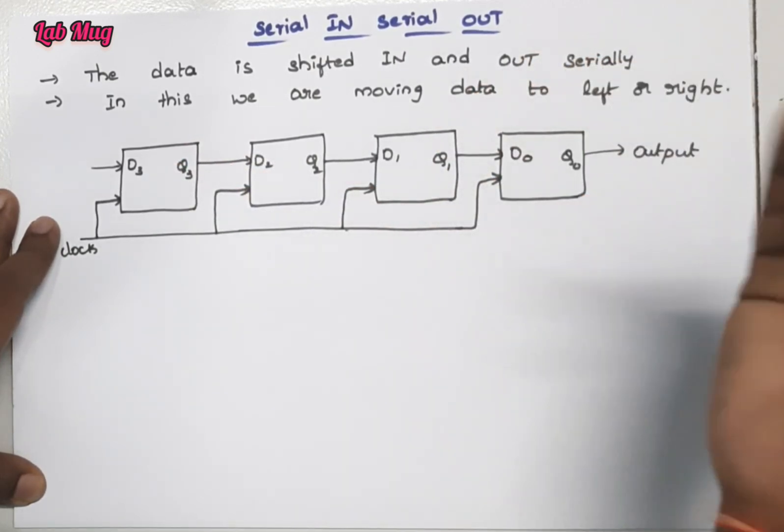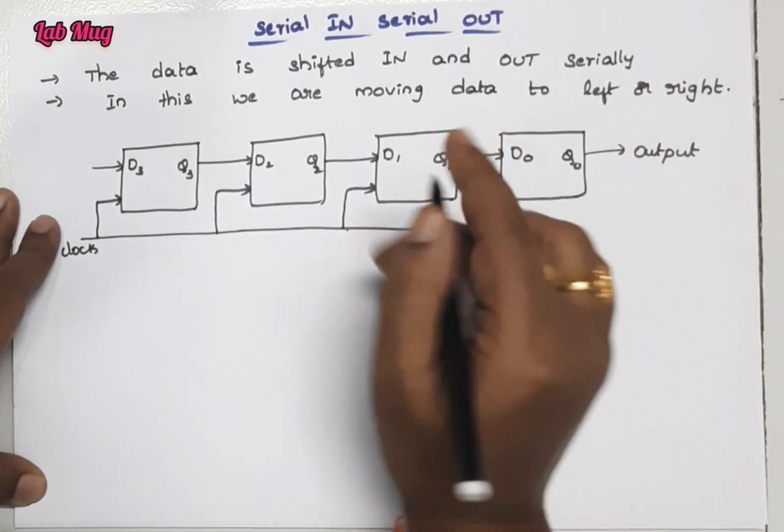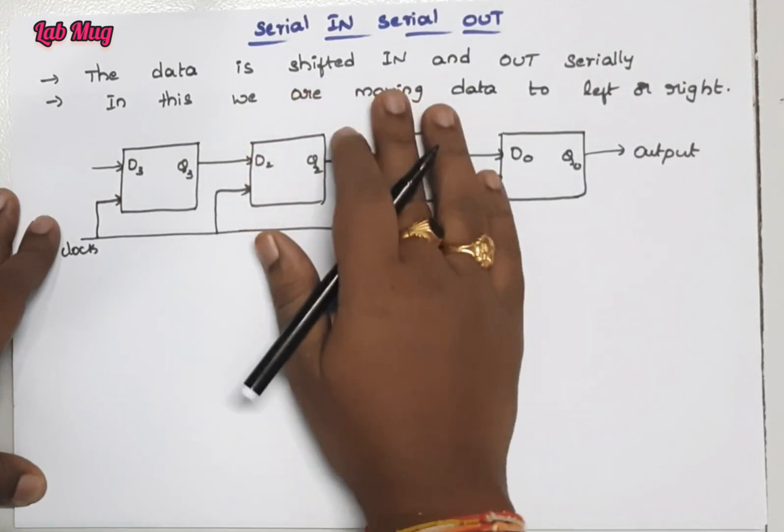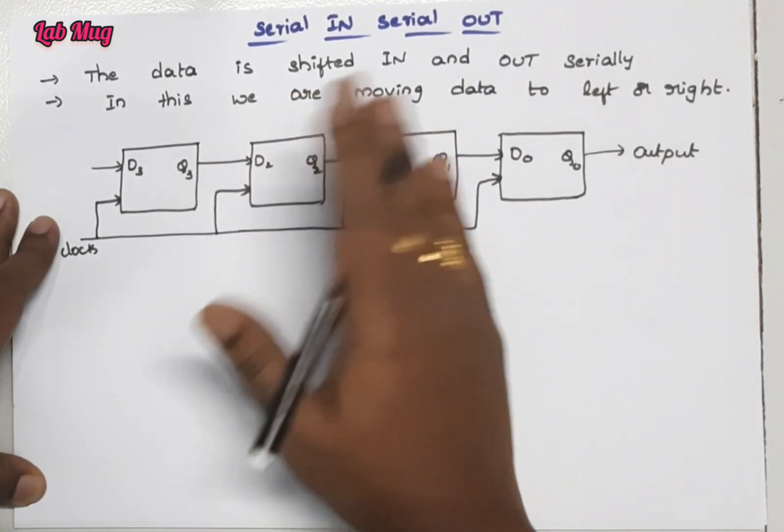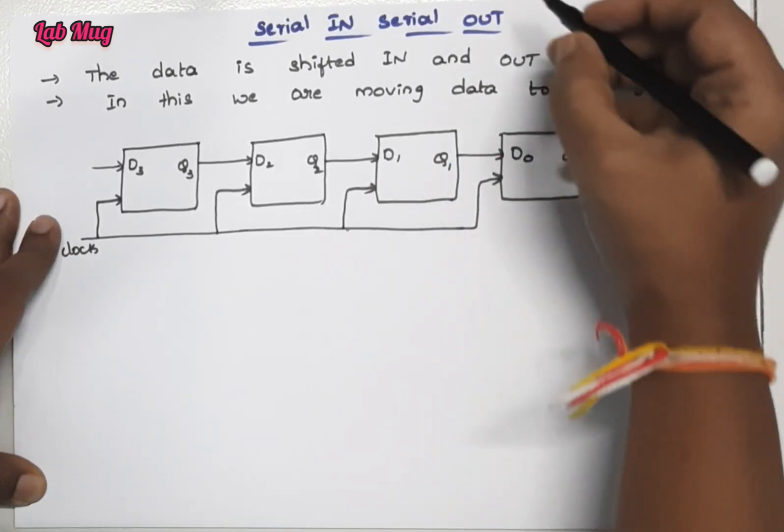This is the simplest technique. First of all, the data is shifted in and out serially. In this, we are moving data from left to right.